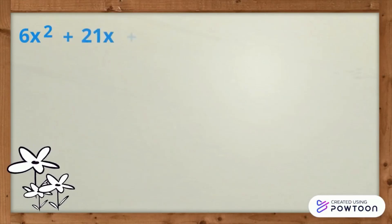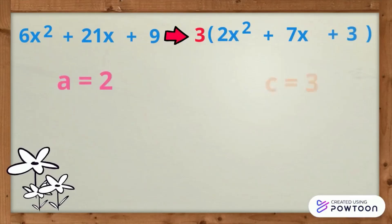Let us check on this step. We are to find the product of A and C. A is 2, C is 3. The product is 6. Now, we are to find the factors of AC that when added equals 7, and that's going to be 1 and 6.